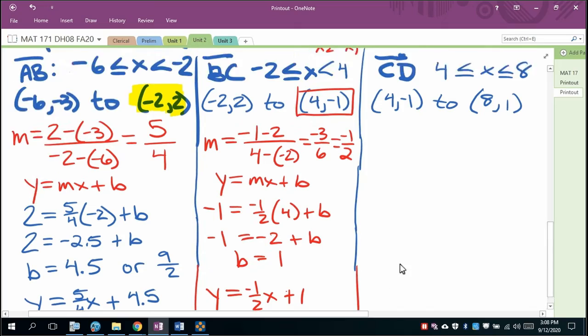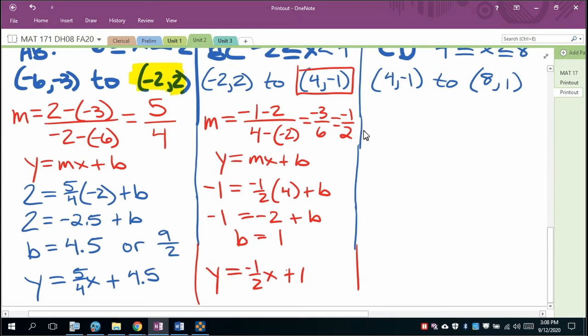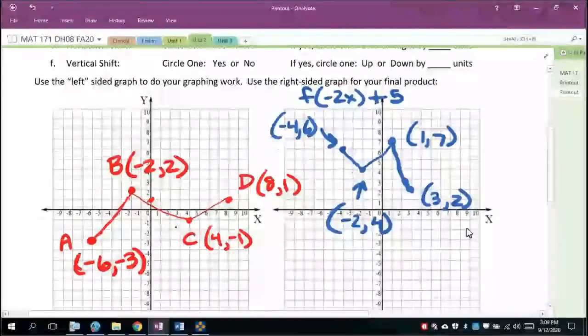Now keep in mind what the domain is, because that's going to come into play when we do the entering of the piecewise. So for the last one, we're going to get 1 minus negative 1 over 8 minus 4, which is 2 fourths or simply 1 half. So plugging into y equals mx plus b, we'll use the second point. So we'll get 1 equal to 1 half times 8 plus b. 1 will equal 4 plus b, b will equal negative 3. So for this we will get y equal to 1 half x minus 3.